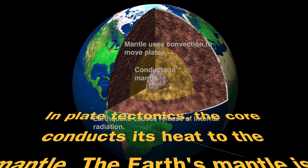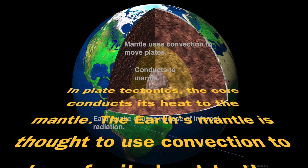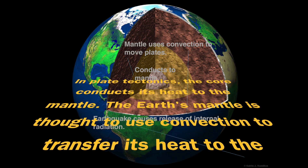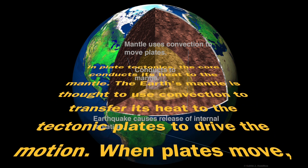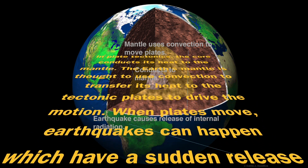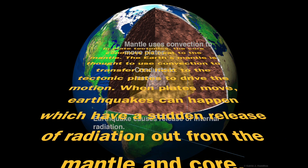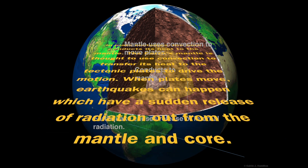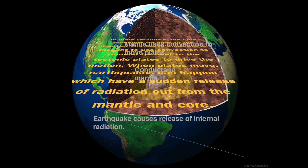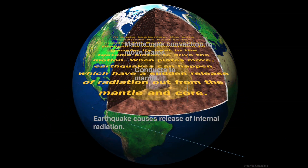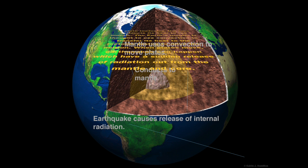In plate tectonics, the core conducts its heat to the mantle. The earth's mantle is thought to use convection to transport its heat to the tectonic plates to drive the motion. When plates move, earthquakes can happen with a sudden release of radiation out from the mantle and core.